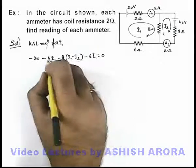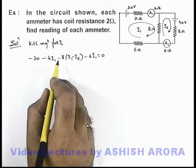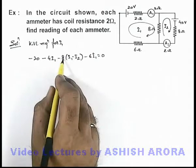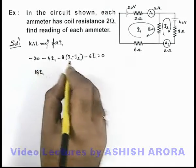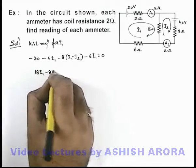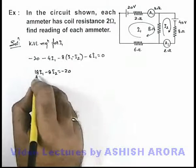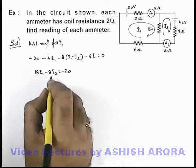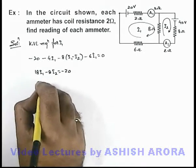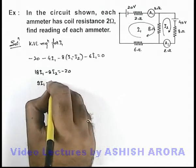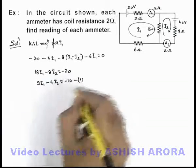Now if we simplify this equation, writing the KVL equation, this will give us 4 plus 6 is 10, plus 8 — that'll be 18i1 minus 8i2 equal to minus 20. If we further simplify by dividing the whole equation by 2, this will give us 9i1 minus 4i2 equal to minus 10. That is our equation number 1.